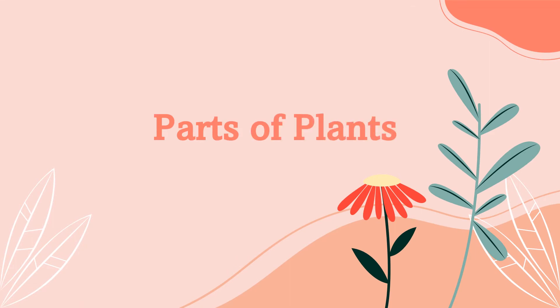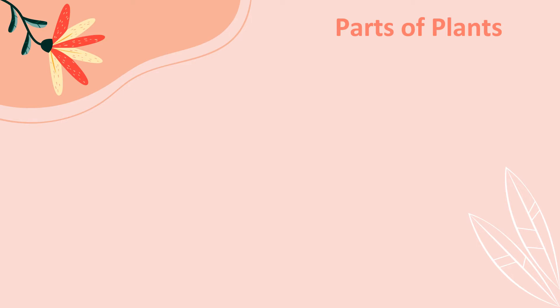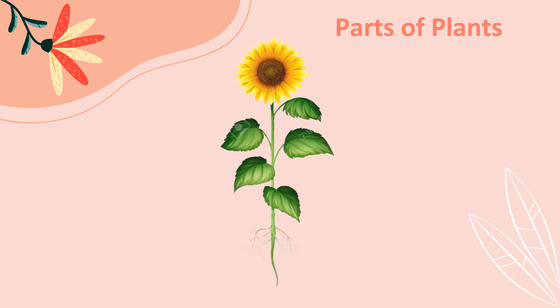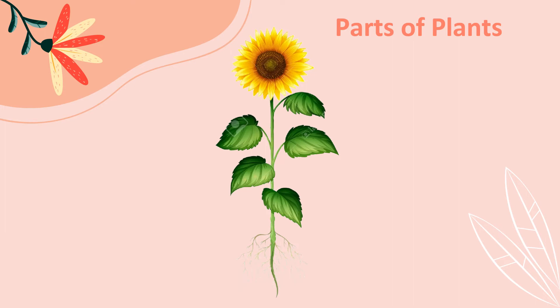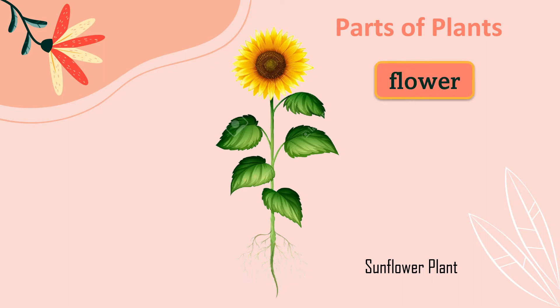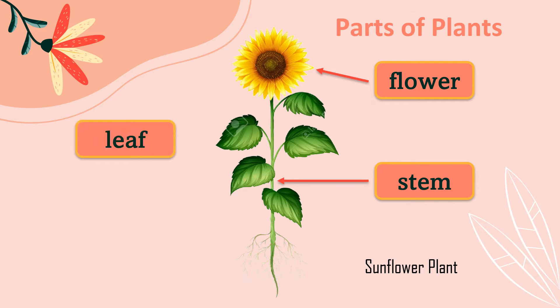Now let us learn about parts of plants. Do you know what are the parts of plants? Do you know what is the name of this plant? This is a sunflower plant. Let us learn what are the parts: number one, flower; number two, stem; number three, leaf; and number four, root.